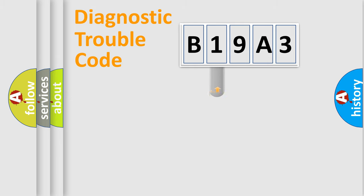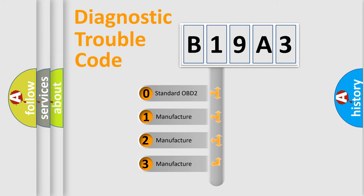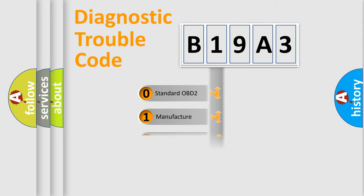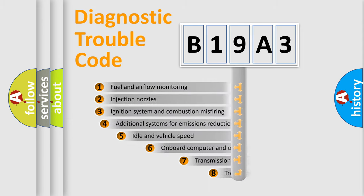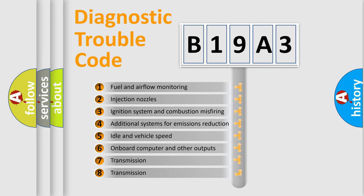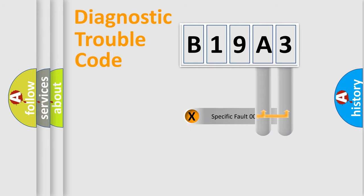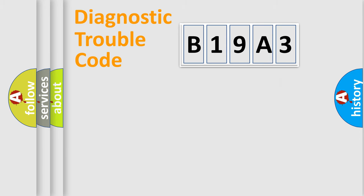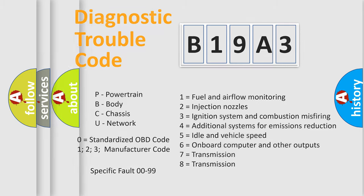This distribution is defined in the first character of the code. If the second character is expressed as zero, it is a standardized error. In the case of numbers 1, 2, or 3, it is a more manufacturer-specific expression of a car-specific error. The third character specifies a subset of errors, and this distribution is valid only for the standardized DTC code. Only the last two characters define the specific fault of the group.